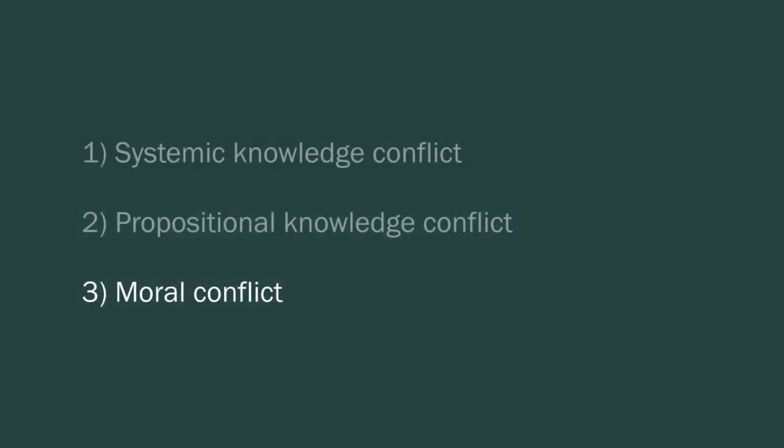A third type of possible conflict is moral conflict, which is fairly unrelated to the first two that I just mentioned. Religious people may perceive science or scientists to be teaching a moral stance to the public, and that moral stance may be in opposition to the stance that they hold.